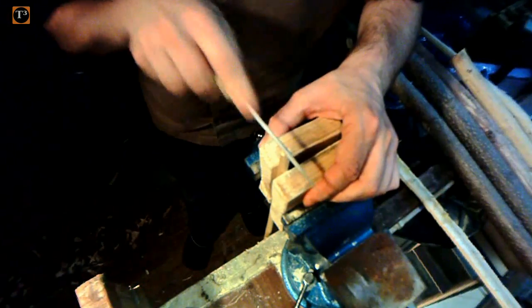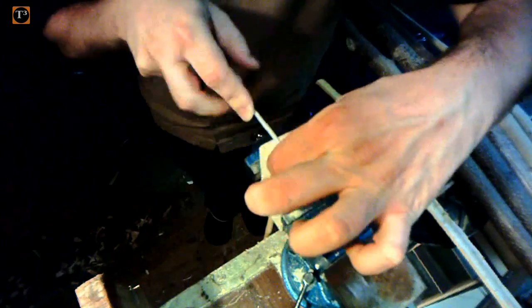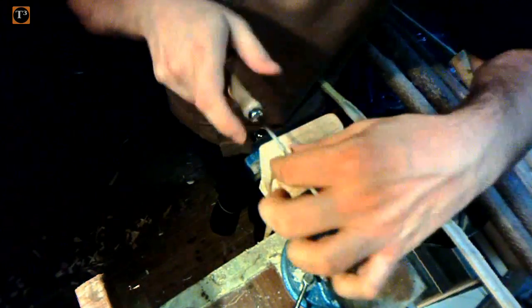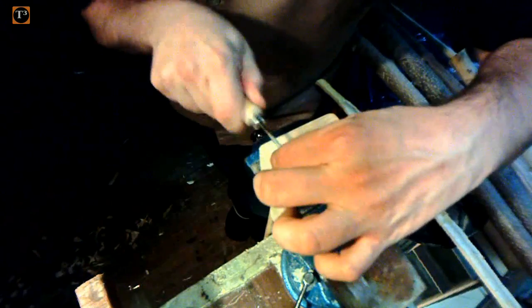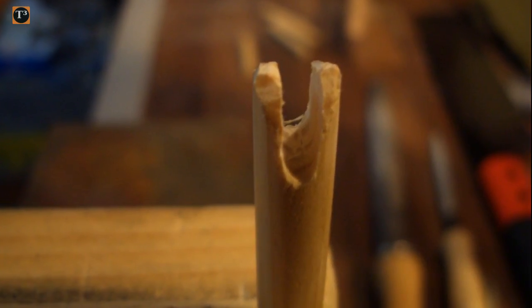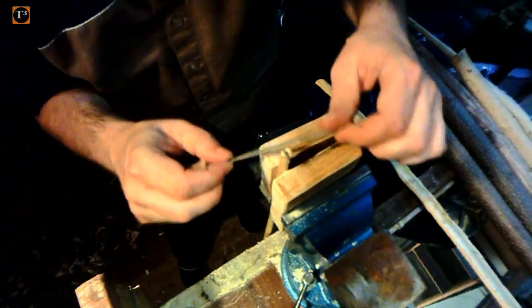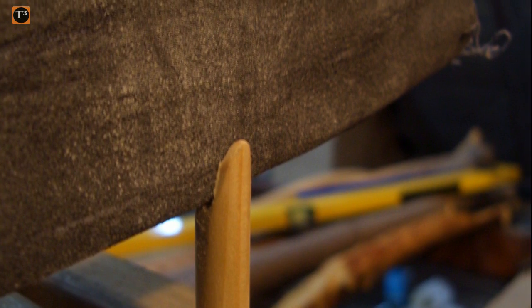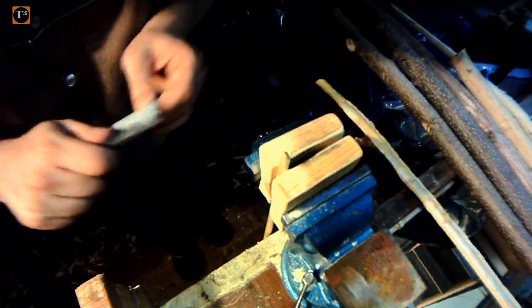Use the round file to widen the slot. Afterwards, you can use a finer half-round file to smoothen your work. To get the nock really slick, such that the arrow releases easily, use some sanding paper.